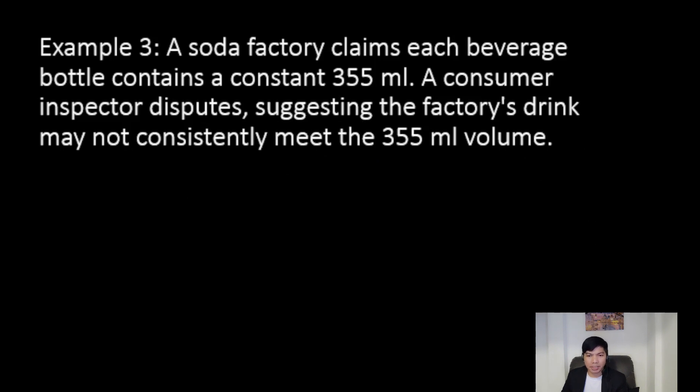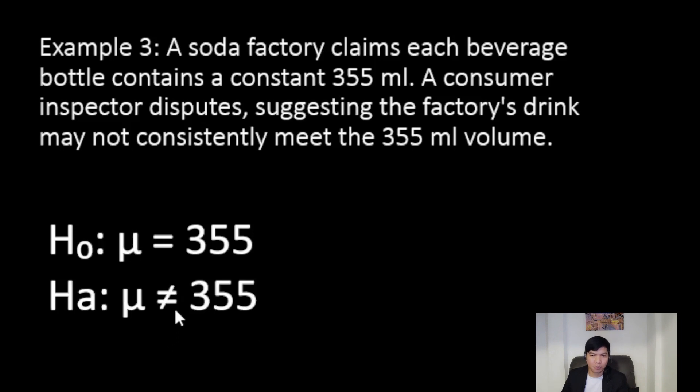So, the null hypothesis can be stated as the mean is equal to 355. And the alternative hypothesis can be stated as the mean is not equal to 355.